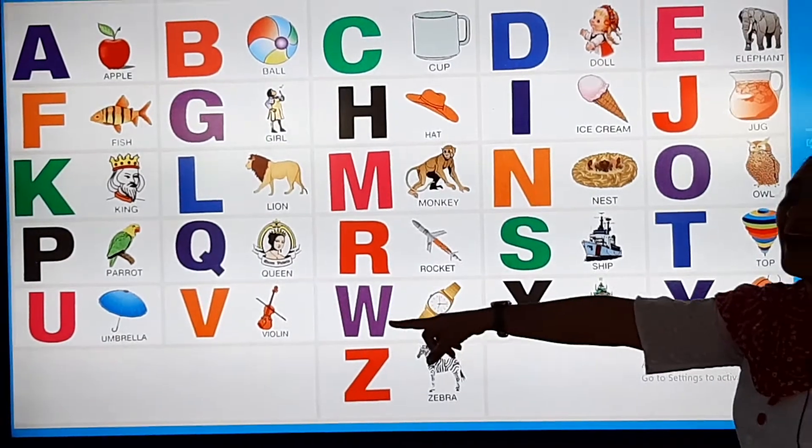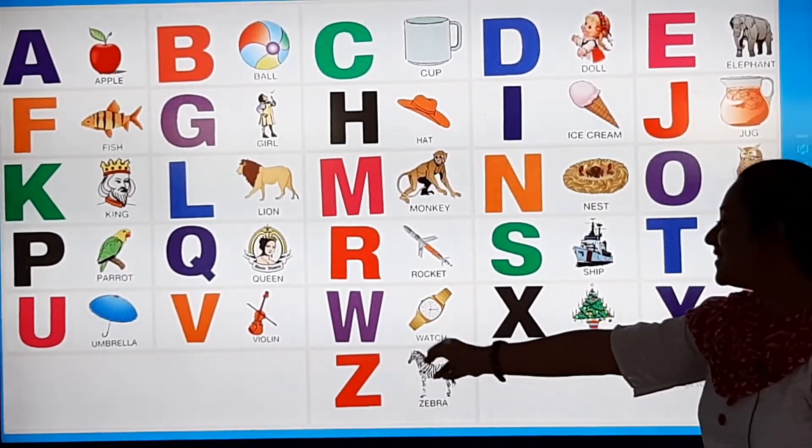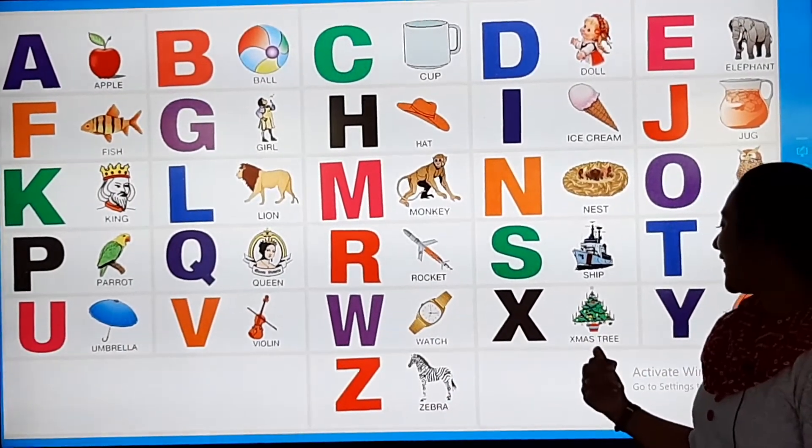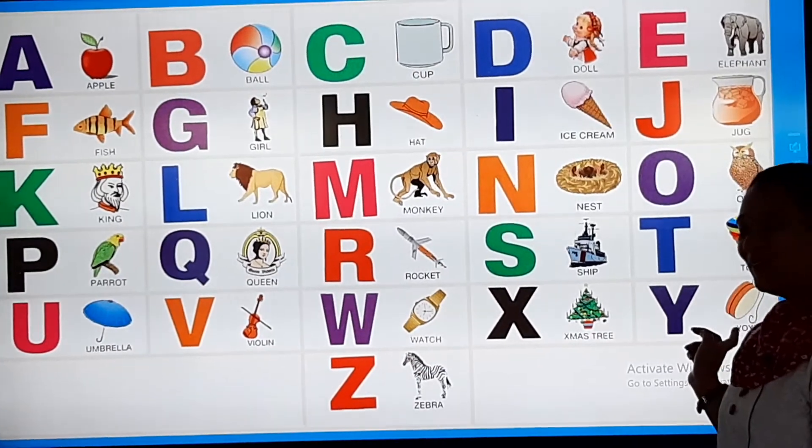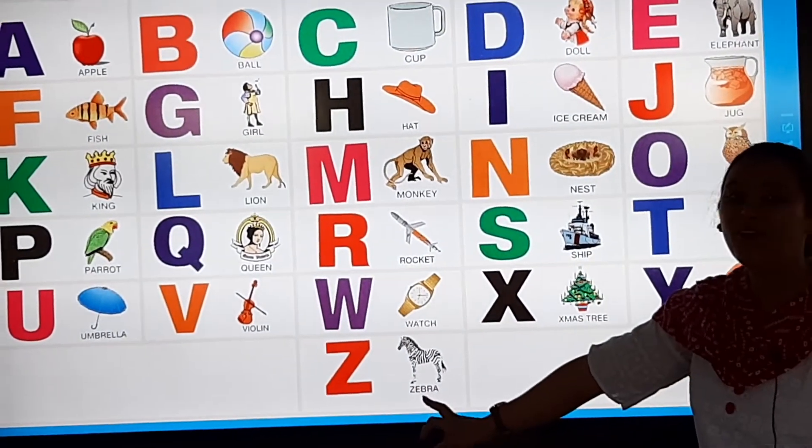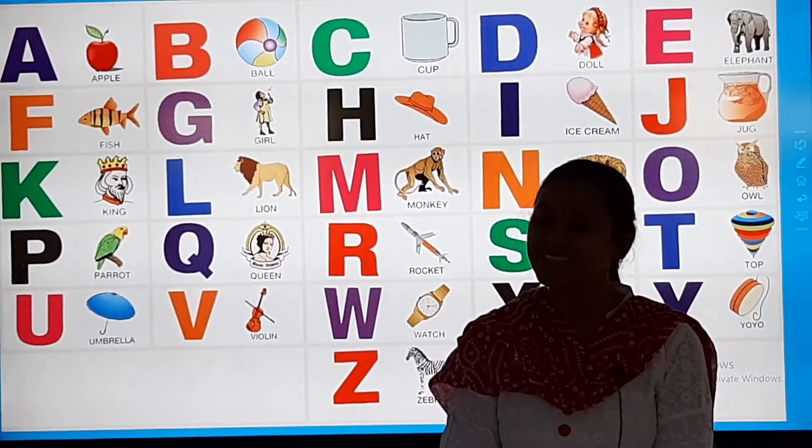U for Umbrella, V for Violin, W for Watch, X for X Mystery, Y for Yo-Yo, and Z is for Zebra. Thank you students and have a nice day.